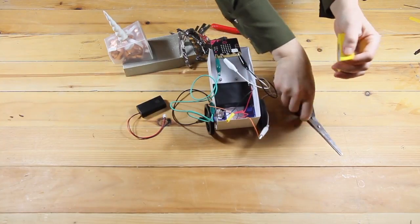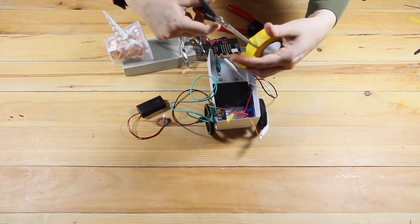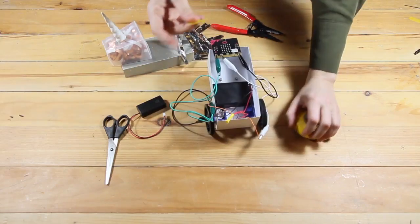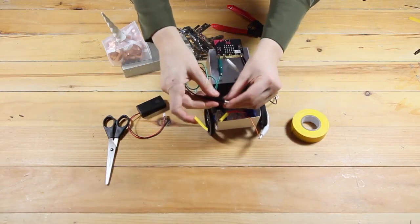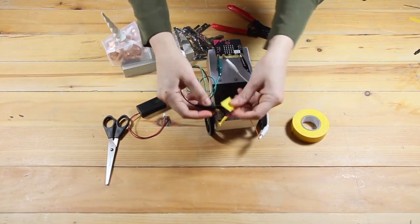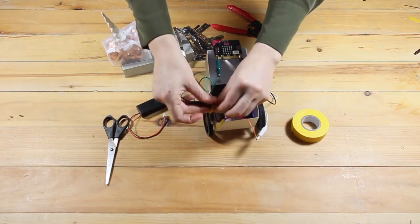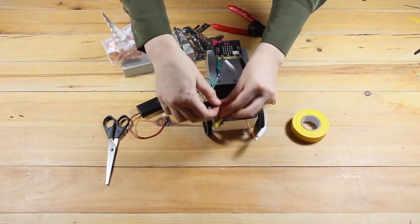Now we're going to do the same for all of the other places where there are bare wires. Here I'm just tidying up the ground, that's the brown and black wires.